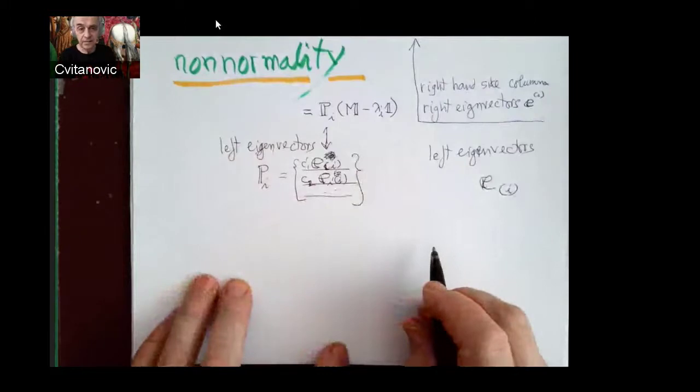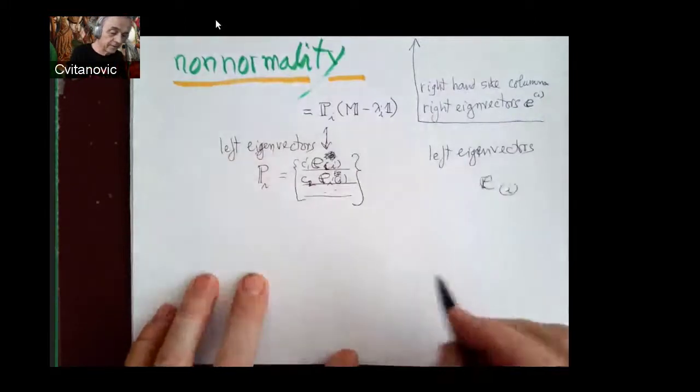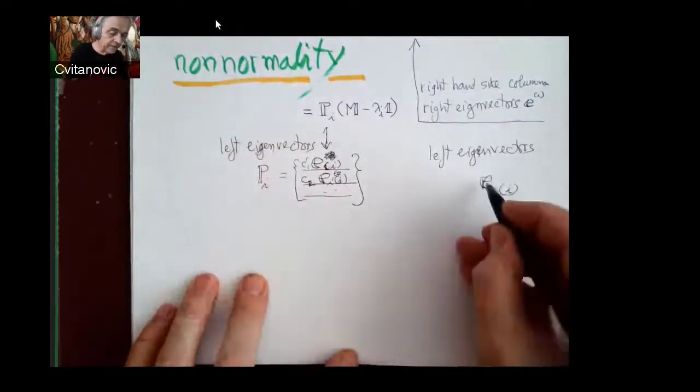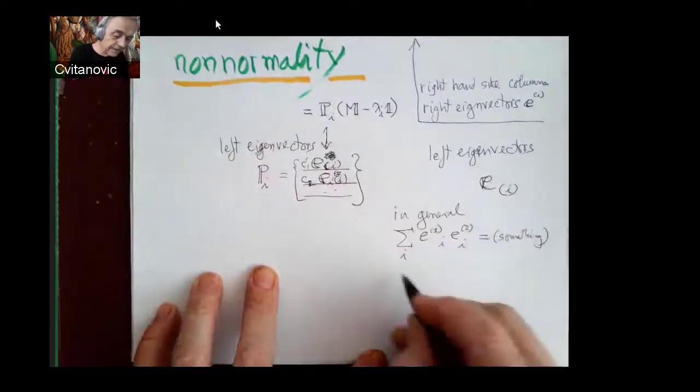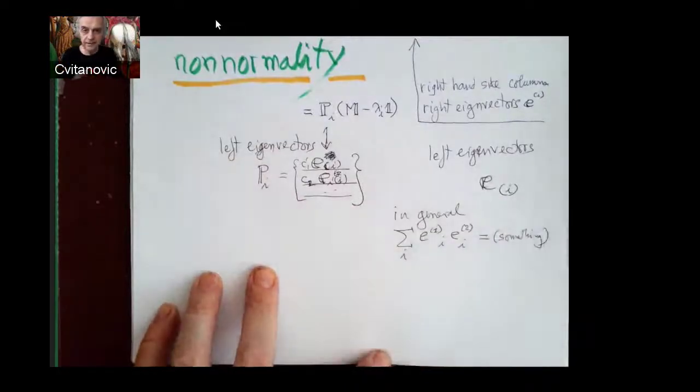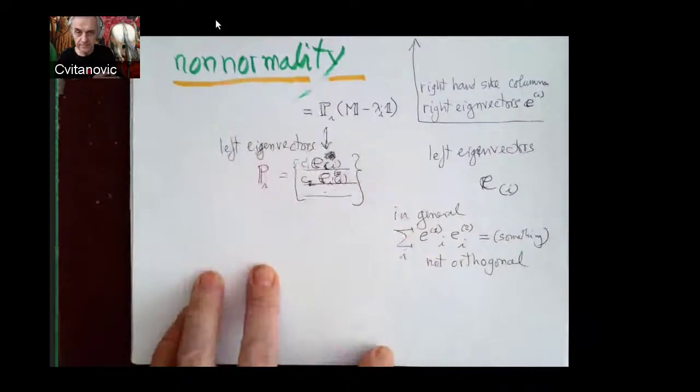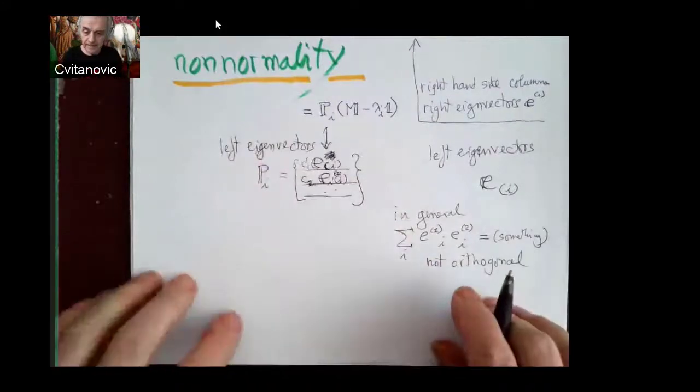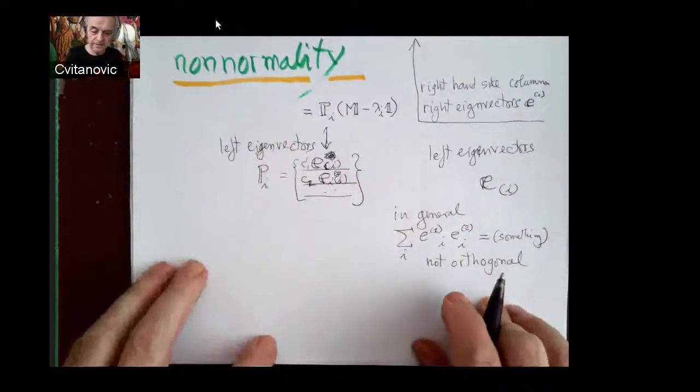Now in general, there's no reason for either set to be orthogonal. Neither the right nor the left eigenvectors are orthogonal. It's called non-normality.